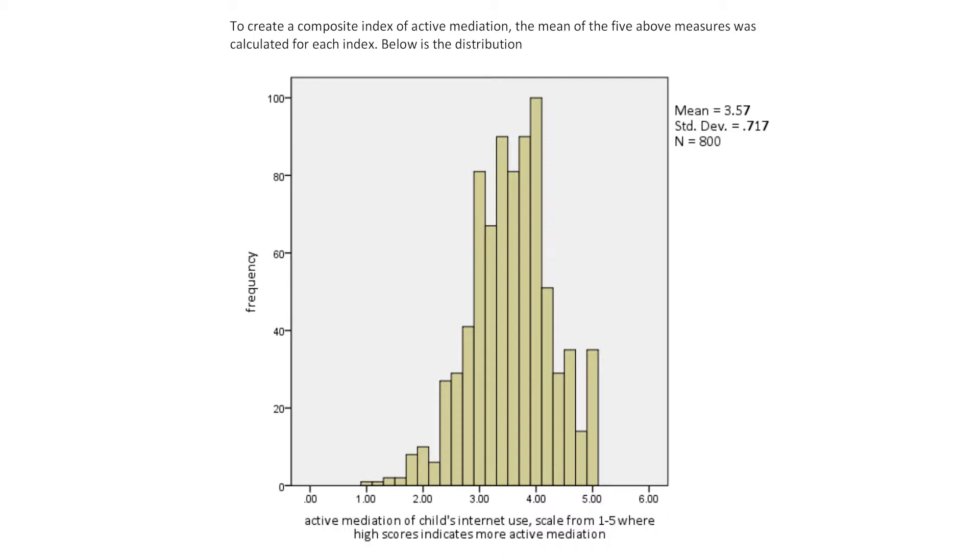First we looked at the correlation matrix to see how all of those different questions related, and found a high correlation broadly among all of those items. We did a test called Cronbach's Alpha, which gives you a sense of whether it's okay to put them all together as one scale. Having determined that it was fine to combine them, we simply added up the scores to get an average score for each parent across those five different indicators.